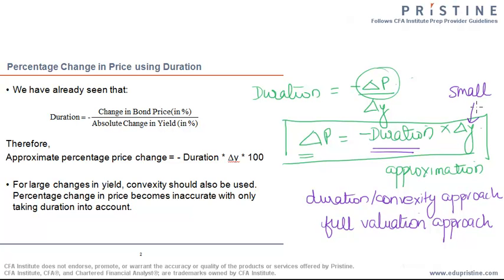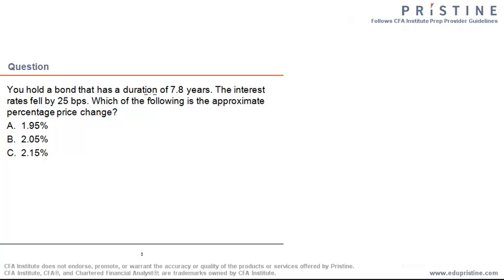Let's solve a question based on this LOS. In this question, you're given that you have a bond of 7.8 years. And they gave you that the interest rates fell by 25 basis points. And you are asked to find the approximate percentage price change.